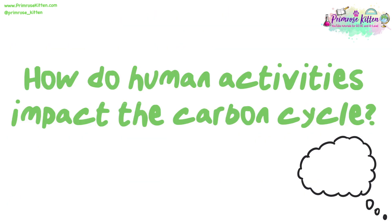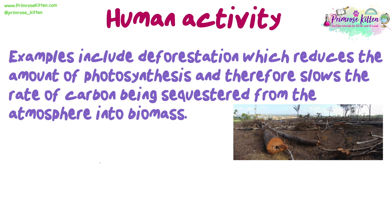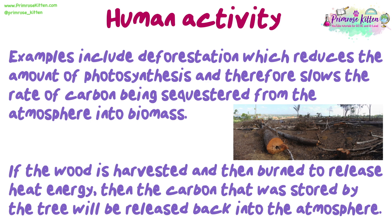How do human activities impact the carbon cycle? Deforestation reduces the amount of photosynthesis and therefore slows the rate of carbon being sequestered from the atmosphere into biomass. If the wood is harvested and then burned to release heat energy, the carbon that was stored by the tree will be released back into the atmosphere.